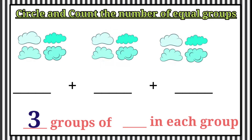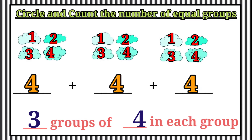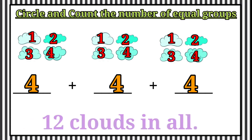Then we will count how many in each group. 1, 2, 3, 4. 4 in each group. So, therefore the answer is 12 clouds in all.